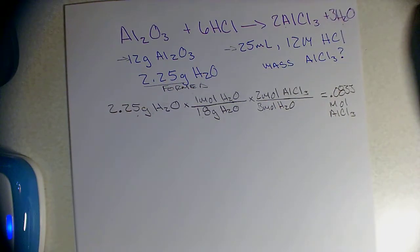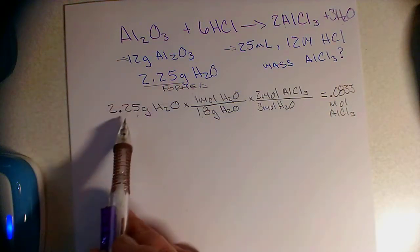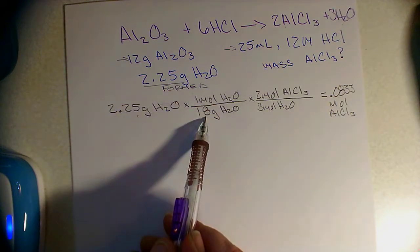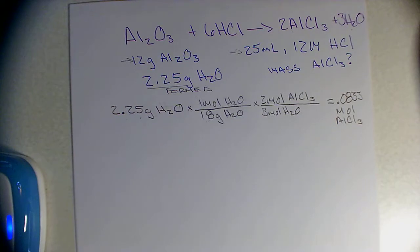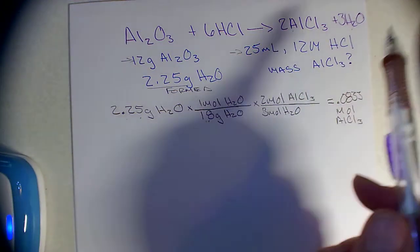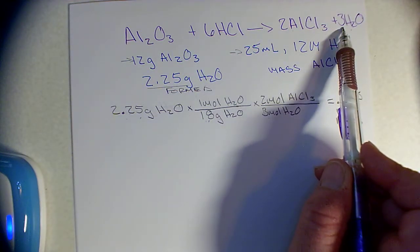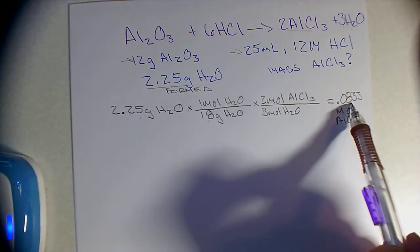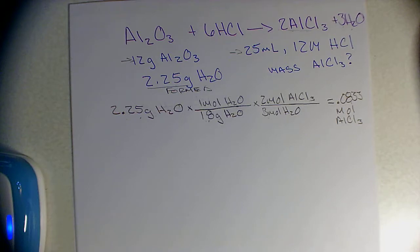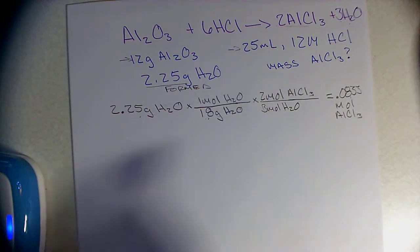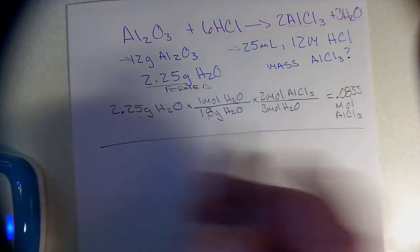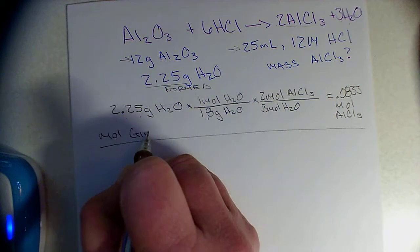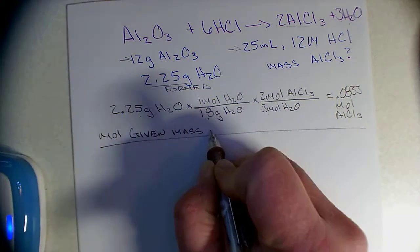That answers the first question — how many moles of AlCl₃ were produced: 0.0833. Now let's do a sanity check. I have 2.25 grams divided by 18 grams per mole, which gives 0.125 moles of water produced. That's a 3 to 2 ratio, so I would expect the moles of AlCl₃ to be smaller — and this number is indeed smaller. I feel good about my answer.